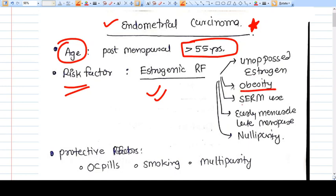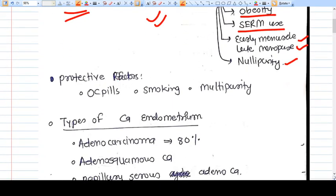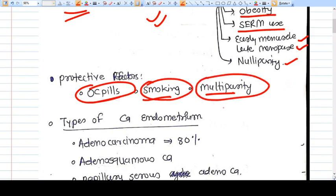In case of obesity, SERM use, early menopause, late menarche, nulliparity - all these are risk factors. Protective factors are OC pills, smoking, and multiparity. OC pills due to progesterone, smoking due to decreasing estrogen through aromatase enzyme inhibition, and multiparity is due to multiple time progesterone exposure.